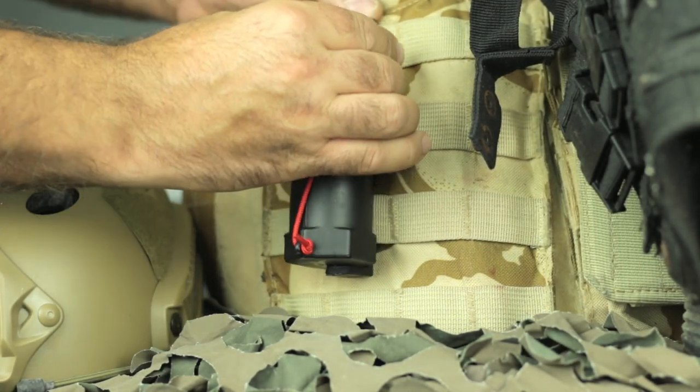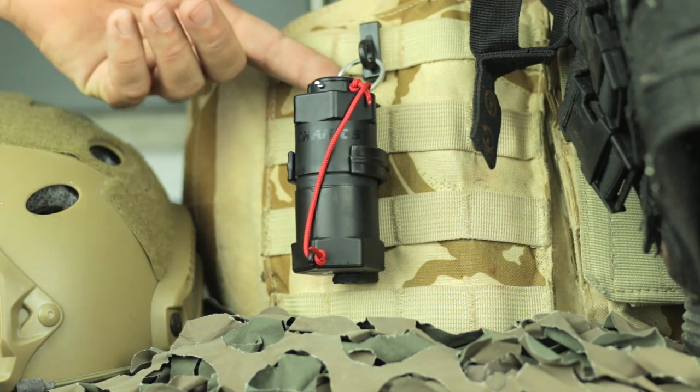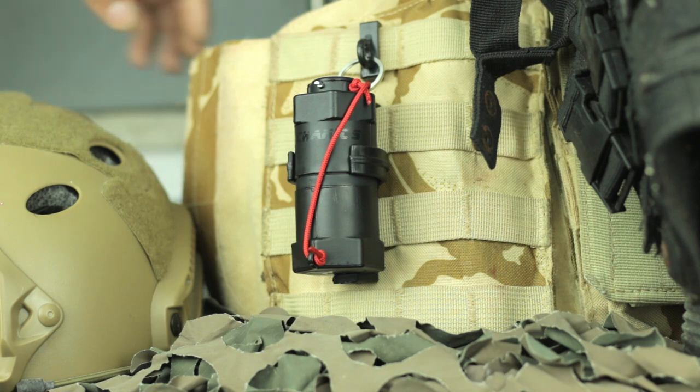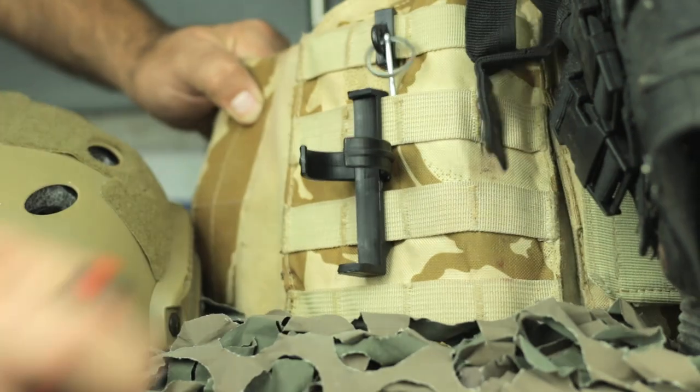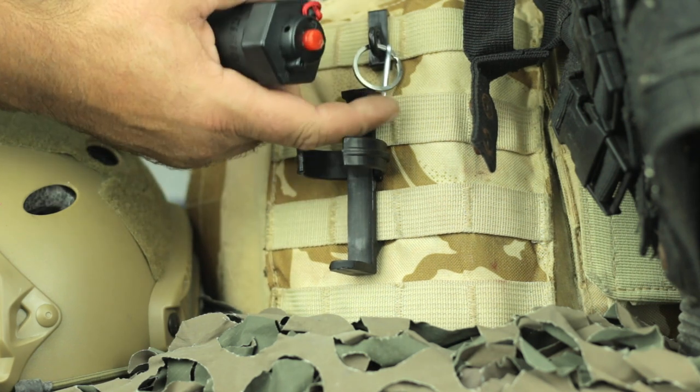You can also use a fast bang. The fast bang allows you to attach the pull pin to your vest. This way when you pull, the chimera is instantly ready to throw and you never lose the pull pin because it stays in the vest.